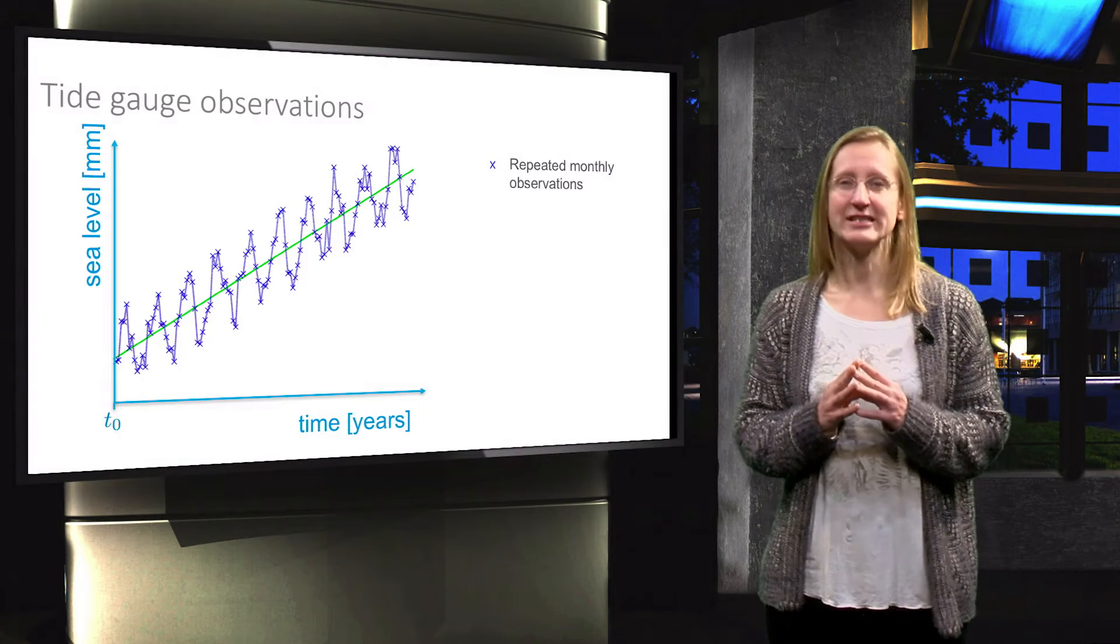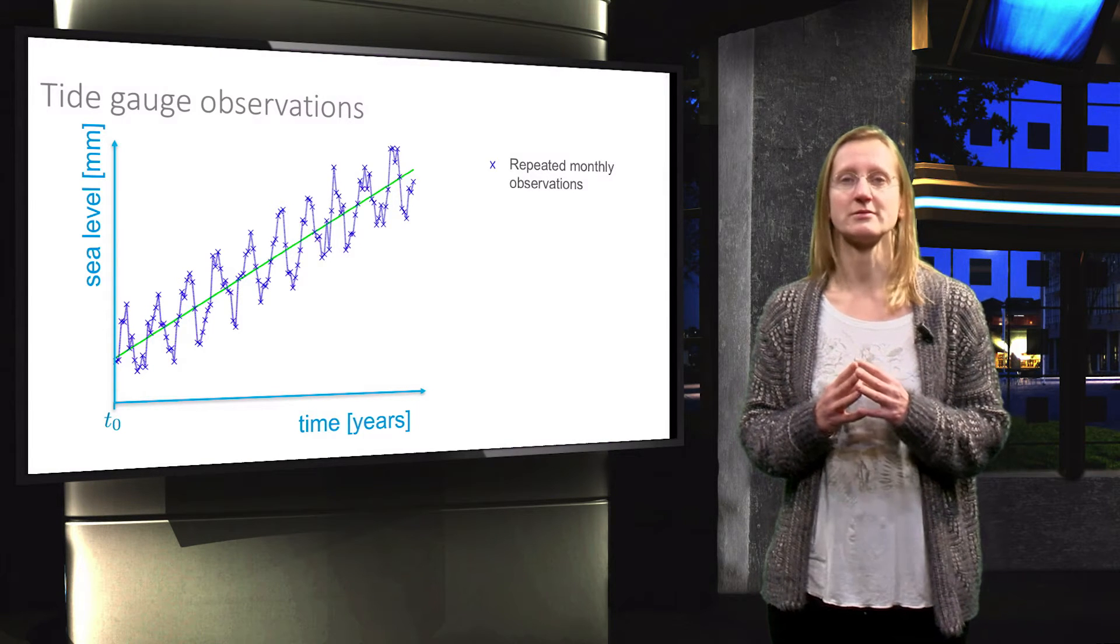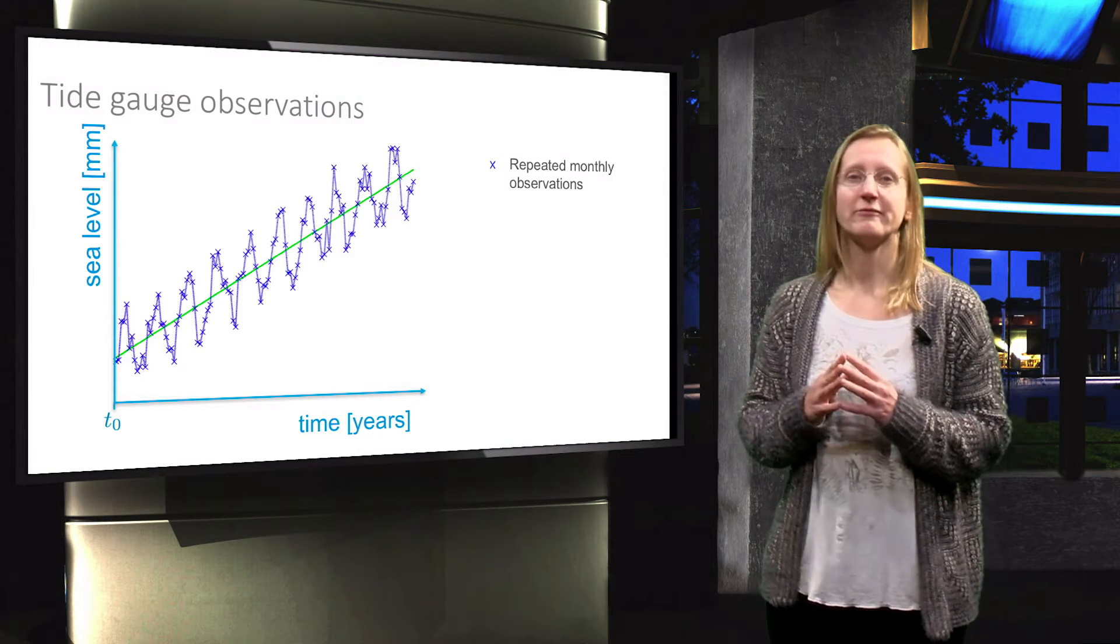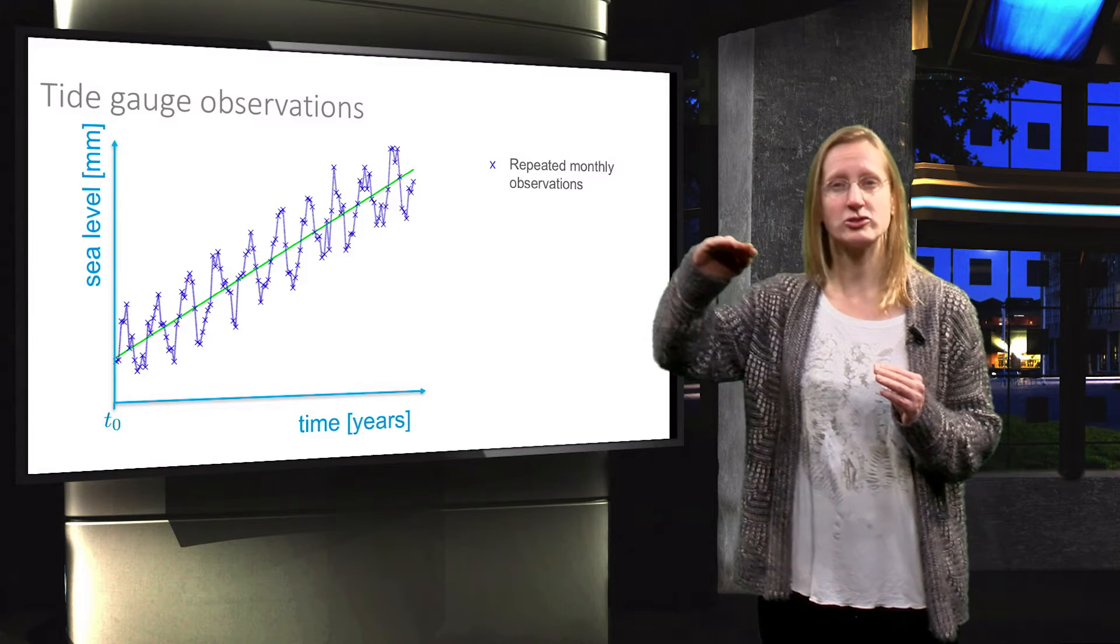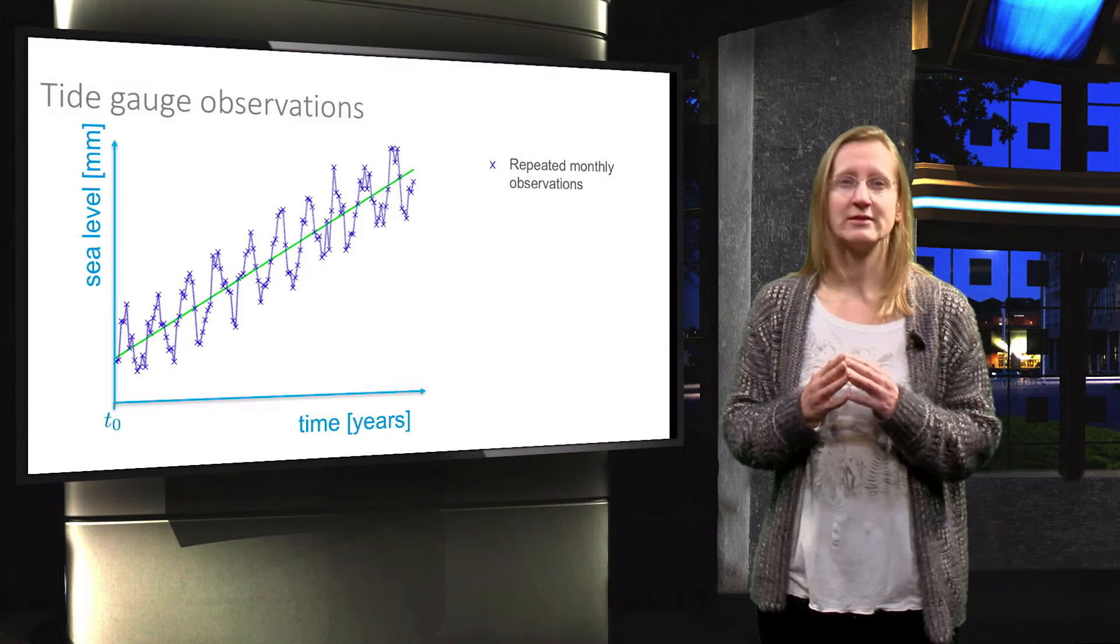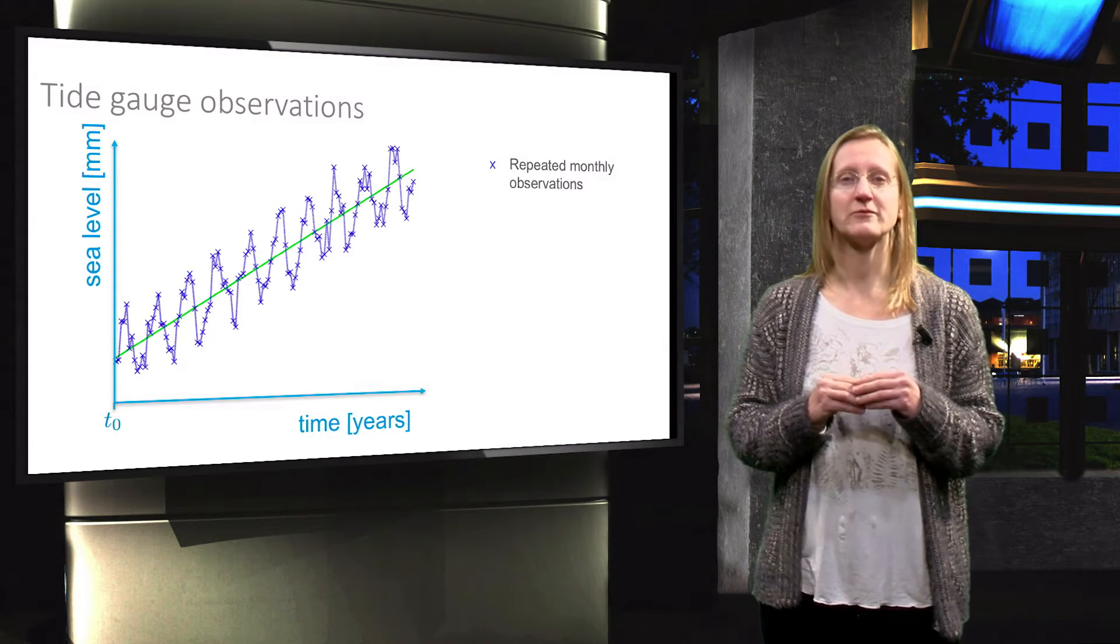This figure shows 10 years of monthly tide gauge observations in Aymuiden, the Netherlands. From the graph you may be able to tell that the sea level rise seems to follow a linear trend and in addition to that there is an annual oscillation. But we will ignore this for the moment.